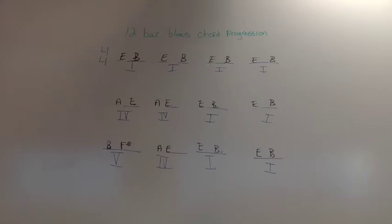So, we go 1, 2, 3, 4, 2, 2, 3, 4, 3, 2, 3, 4, 4, 2, 3, 4. Now, we jump up to A and E. 1, 2, 3, 4, 1, 2, 3, 4. Back down to E and B, 1, 2, 3, 4, 1, 2, 3, 4.